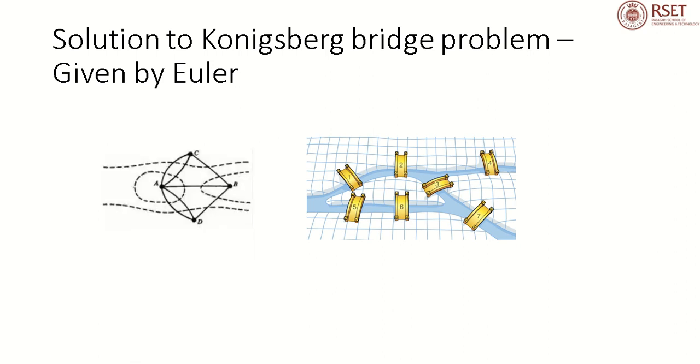The problem can be represented by a graph. The four land areas are given by A, B, C, and D. This problem we were discussing in Module 1. The two islands and banks of the river are connected by seven bridges. The bridges are denoted by the edges, the land areas by the vertices A, B, C, and D.